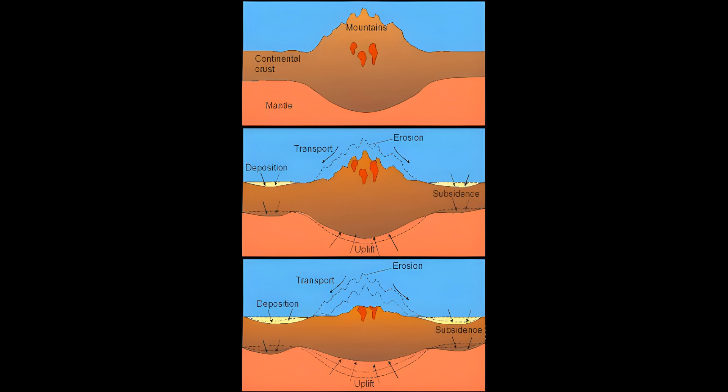Tectonic uplift results in denudation, processes that wear away the Earth's surface by raising buried rocks closer to the surface. This process can redistribute large loads from an elevated region to a topographically lower area as well, thus promoting an isostatic response in the region of denudation, which can cause local bedrock uplift.